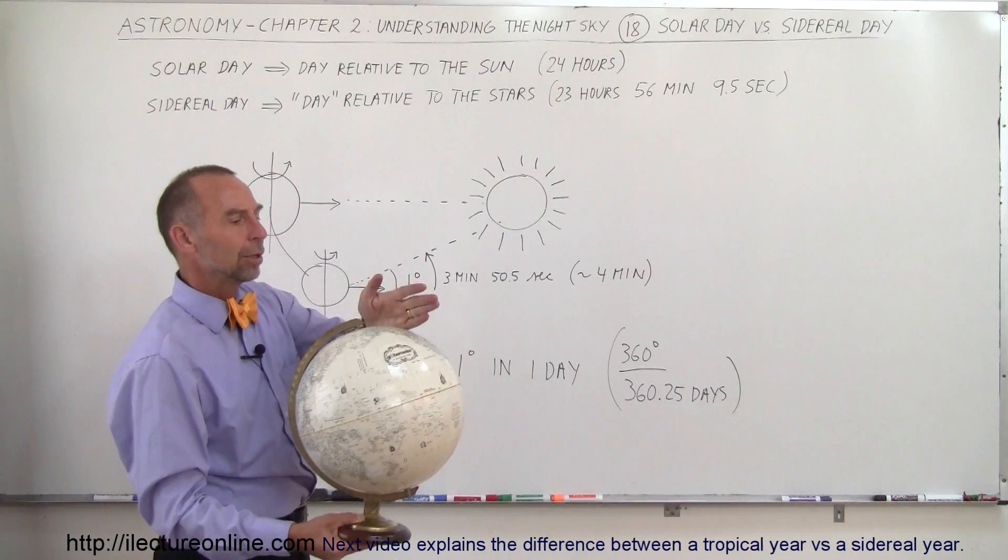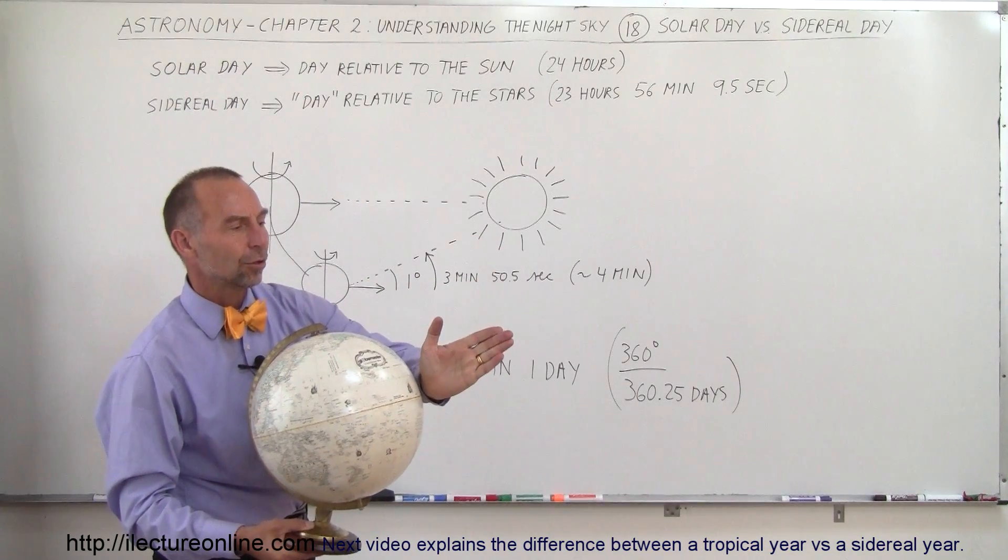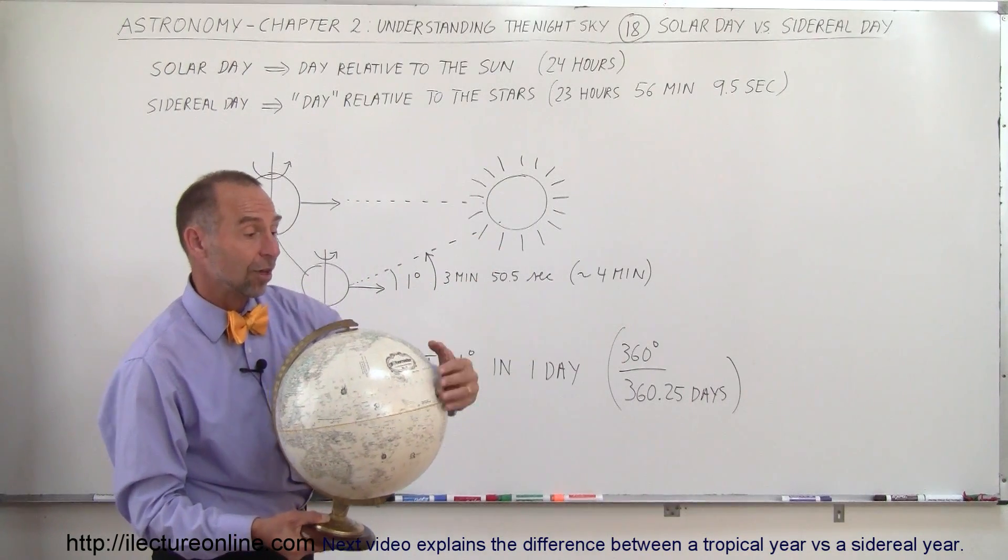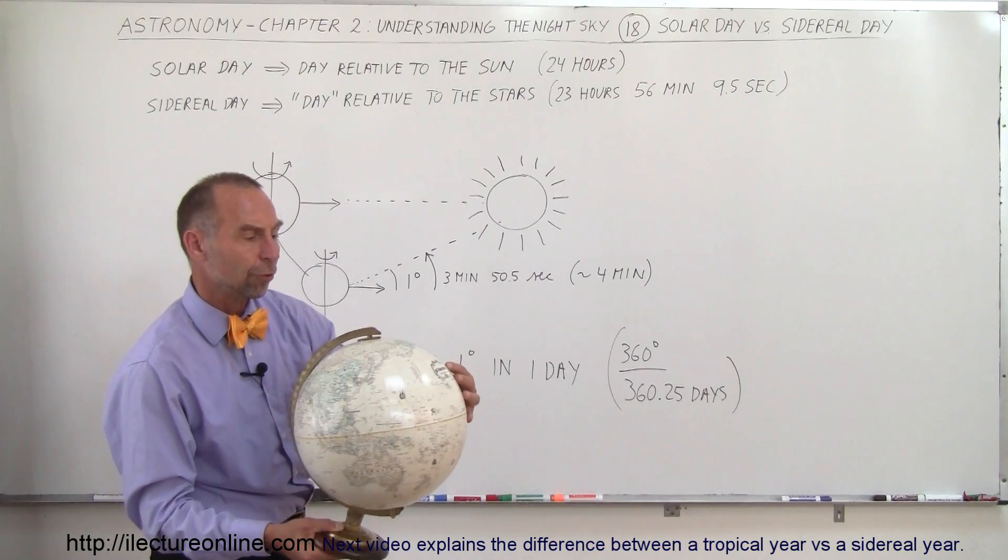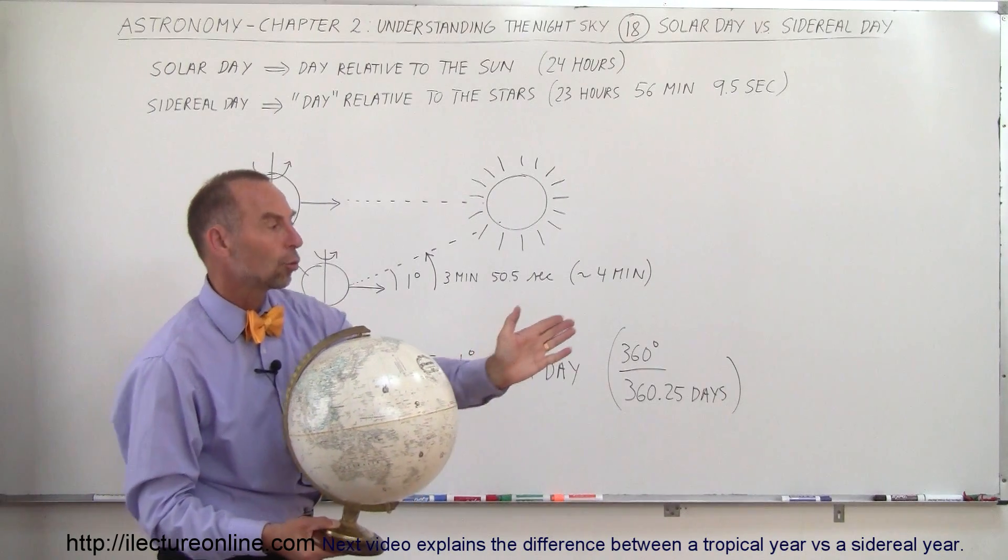So when the Earth then makes one complete rotation, if you're standing on the Earth, you're no longer pointing directly at the Sun. The Earth will have to turn for another four minutes before you again point directly to the Sun.